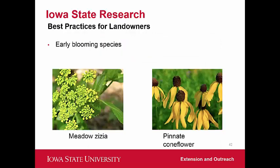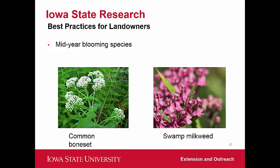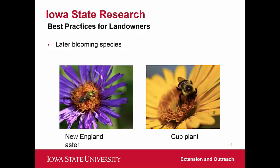Early blooming species include meadow zizia and pinnick coneflower — seen out in the field on prairies and along roadsides. These are important especially coming out of winter, providing great resources for bees that need pollen and nectar as fast as possible. Mid-year blooming species like common boneset and swamp milkweed are great for bees, and milkweed is also great for monarch populations — monarchs can only complete their life cycle by laying eggs on milkweed. Common milkweed and swamp milkweed are great resources for monarch butterflies as well.